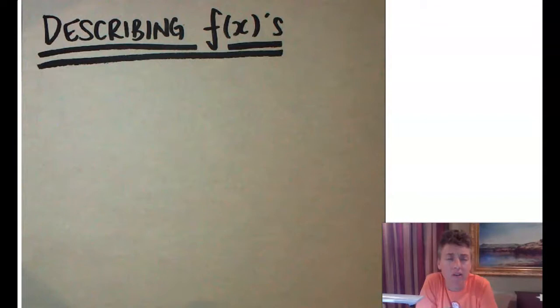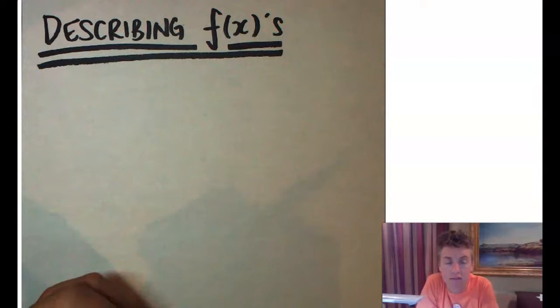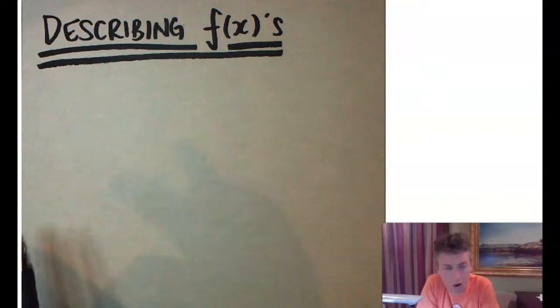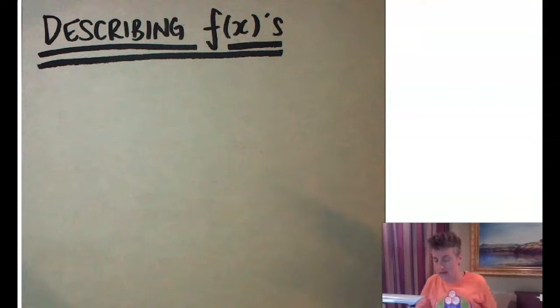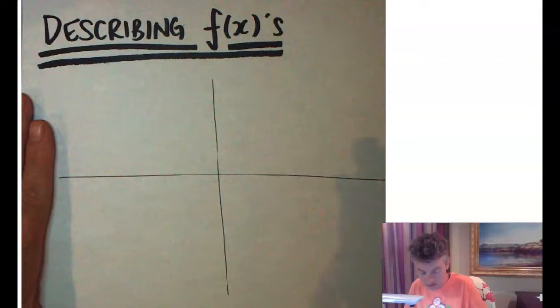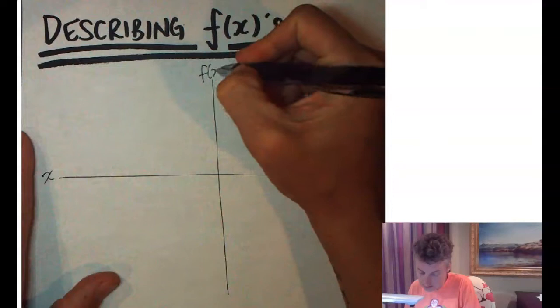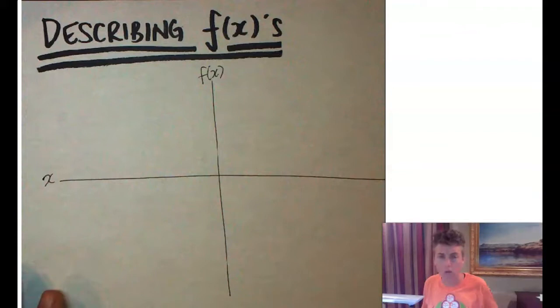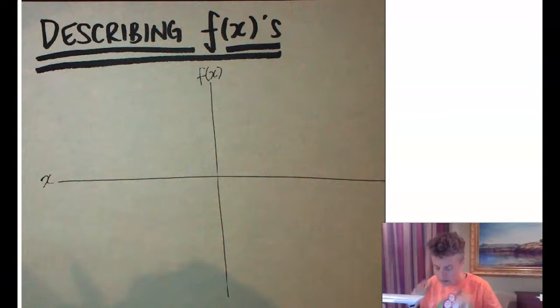Welcome back to another episode of ICS Precalculus. Today we are talking about describing functions. My name is Ms. Agin and we're about to have a good time. If we're going to describe a function, we should probably draw one on a coordinate grid to have any sort of meaningful discussion. We've got our x-axis and our y-axis, also known as f of x since this is a function. Let's draw a quartic function with a negative leading coefficient.